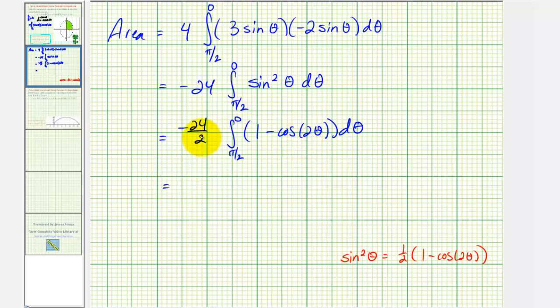Now we can go ahead and integrate. Here we would have negative 12. The anti-derivative of one with respect to theta would just be theta. And then integrate cosine two theta, we have to perform substitution where u would be two theta, and differential u would be two d theta, dividing both sides by two.